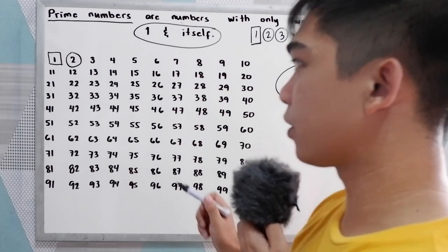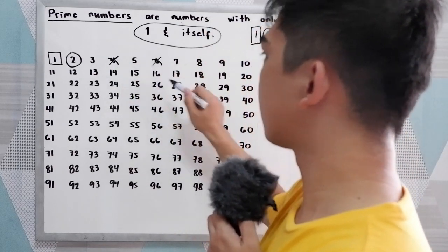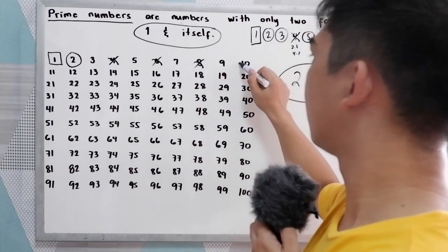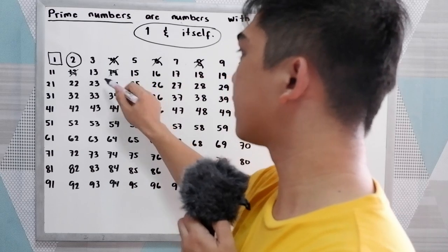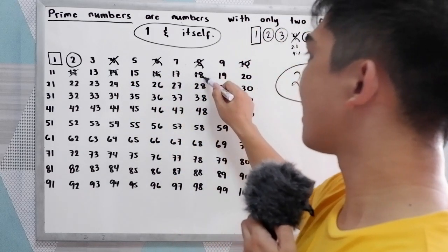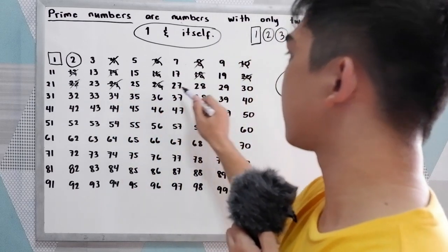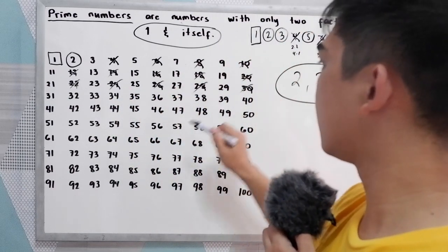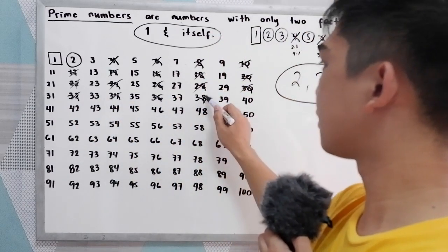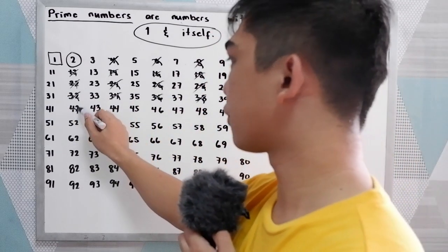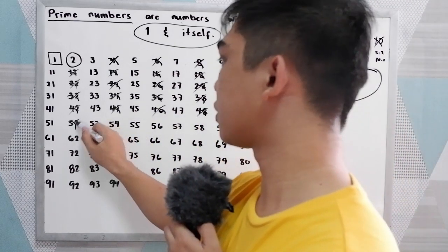Multiples of two are: 4, 6, 8, 10, 12, 14, 16, 18, 20, 22, 24, 26, 28, 30, 32, 34, 36, 38, 42, 44, 46, 48, 52.